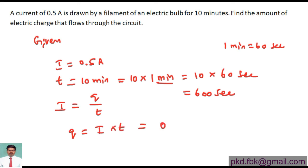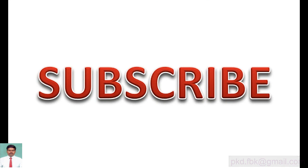Current is equal to 0.5 multiplied with the time 600. So 0.5, that is nothing but half into 600. On canceling, this gives us 300 coulombs. Subscribe to my channel and also press the bell icon for important updates.